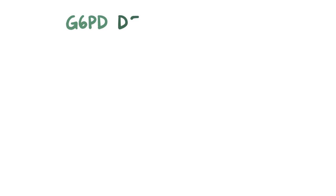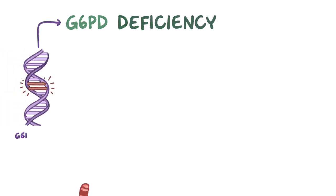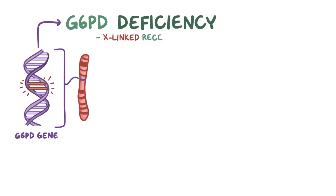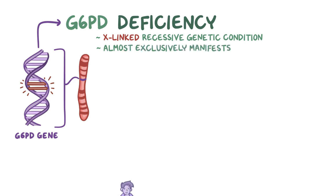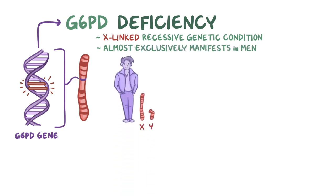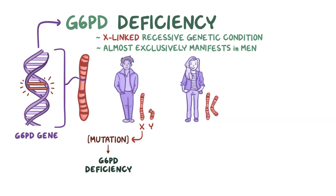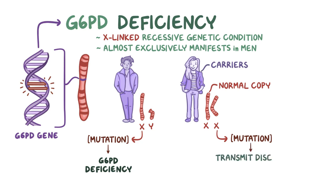G6PD deficiency is caused by mutations on the G6PD gene, which is found on the X chromosome, and thus is an X-linked recessive genetic condition, and it almost exclusively manifests as a disease in men, since they have one X and one Y chromosome. So if the one and only X chromosome has the mutation, then they have the disorder. Women, on the other hand, have two X chromosomes, so those with an X chromosome that has a mutation still have another X chromosome with a normal copy of the gene, and thus females are usually carriers and only transmit the disease to their sons.